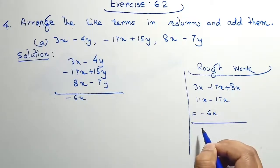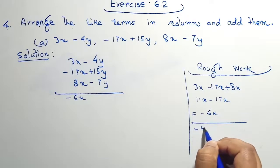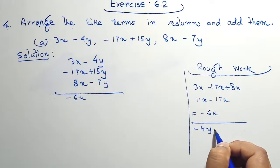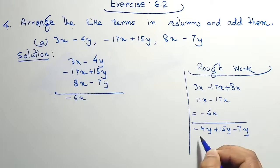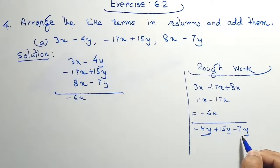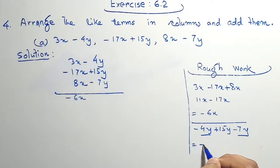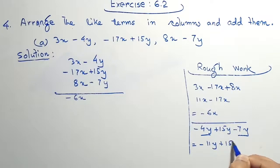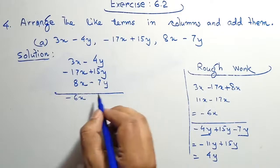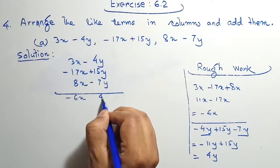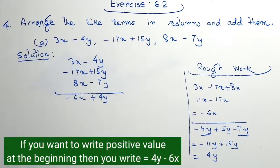Again we find the y value. Therefore minus 4y plus 15y minus 7y. So minus 4y minus 7y gives minus 11y, plus 15y. Therefore the value will be plus 4y. So 4y positive — this is our answer.